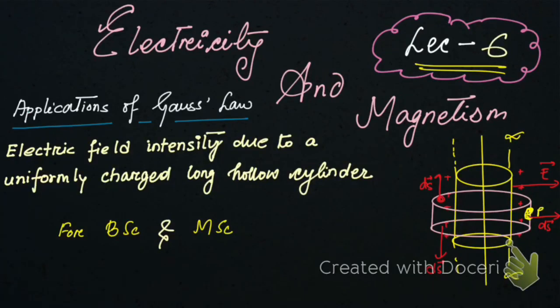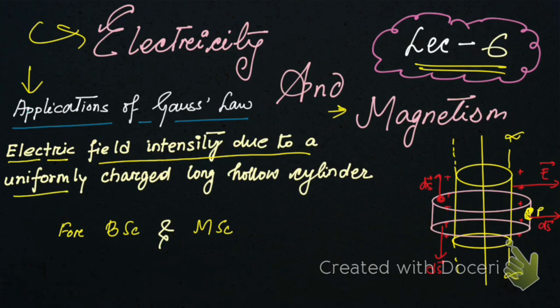Hello friends, welcome to lecture number six of Electricity and Magnetism. I have already made five lectures — links are in the description box. This is another application of Gauss's law. Here we are going to discuss electric field intensity due to a uniformly charged long hollow cylinder. Please subscribe to the channel if you are new, share with your friends, and hit the bell icon so you get notified when the next lecture is uploaded.